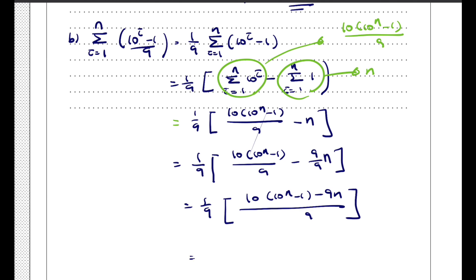The final answer is (10·10^(n−1) − 9n)/81. We have shown that the sum of all terms in the sequence equals (10·10^(n−1) − 9n)/81. QED.